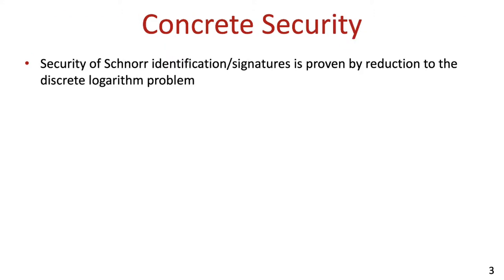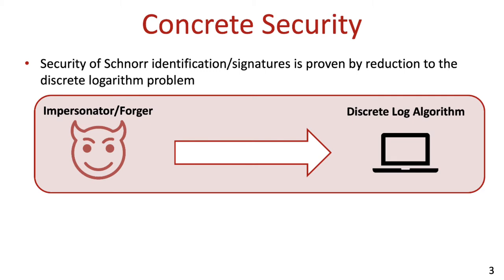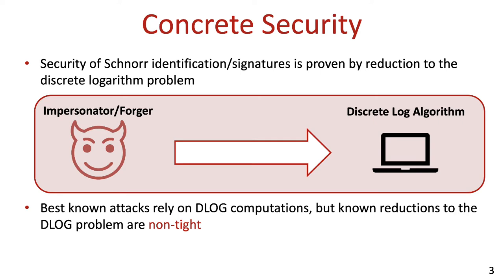The security of Schnorr's identification and signature schemes is typically proven via a reduction to the discrete logarithm problem. Namely, it assumes the existence of some successful impersonator against Schnorr's ID scheme, or a successful forger against Schnorr's signatures, and converts them into an algorithm for computing discrete logarithms, which performs better than it should according to some underlying assumption. This seems natural, since the best-known attacks against these schemes rely on discrete log computation, but unfortunately the reductions that we have to the discrete log problem are non-tight.